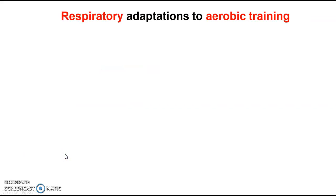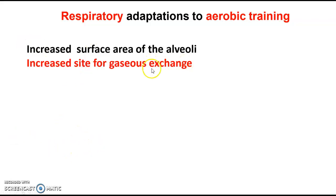Last couple — respiratory adaptations. Within our respiratory system, if we do aerobic training, things change. Firstly, we have an increased surface area of the alveoli — our first site for gaseous exchange — which means we have an increased site for gaseous exchange, so we can get more oxygen into our blood capillaries and take them through to the muscles.